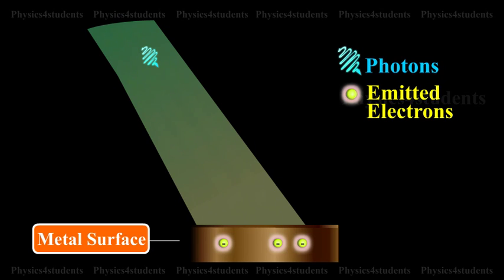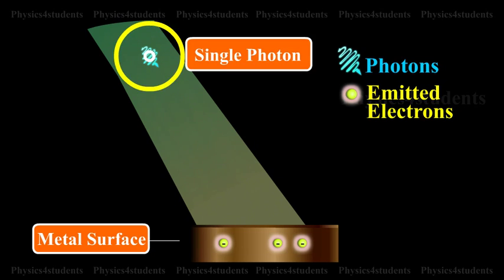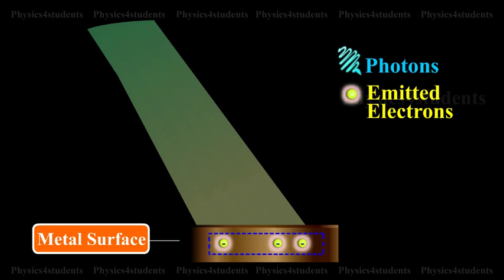According to Einstein, the emission of photoelectron is the result of the interaction between a single photon of the incident radiation and an electron in the metal.